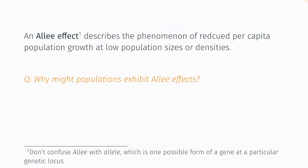Mate limitation is a great example. If the density of the population is low, then you might not be able to find any mates, so you're not going to be able to reproduce. Pollination and seed dispersal are also good examples. If something is pollinated by wind, and there are fewer plants per area, then it's less likely that the pollen is going to land on it.